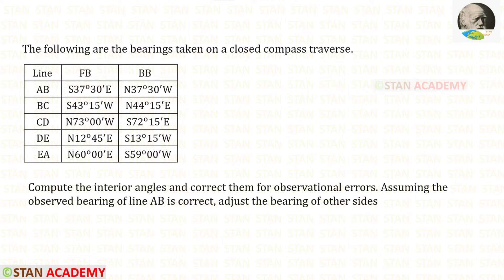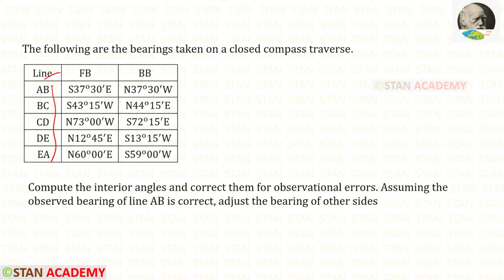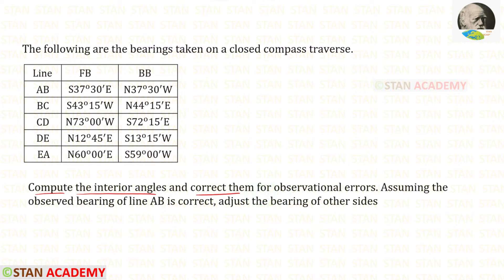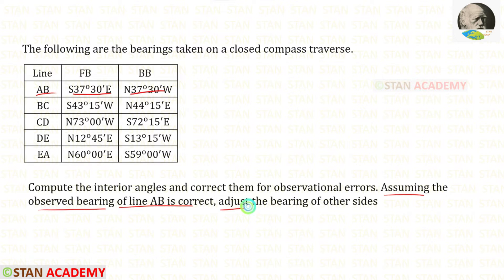Hello everyone. Today we are going to do a problem based on compass surveying. Let us read the question. The following are the bearings taken on a closed compass traverse. Lines are given with their forebearing and back bearings. Compute the interior angles and correct them for observational errors. Assuming the observed bearing of line AB is correct, adjust the bearing of other sides. The bearings are given in reduced bearing.